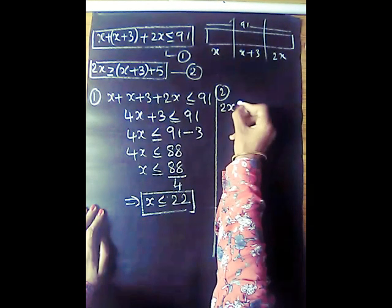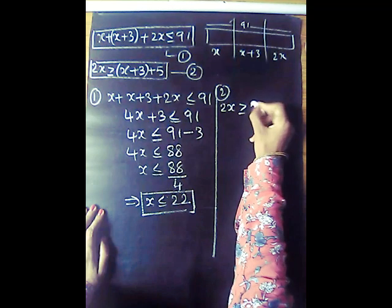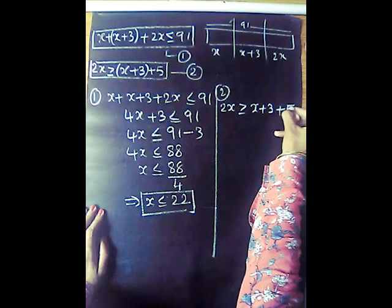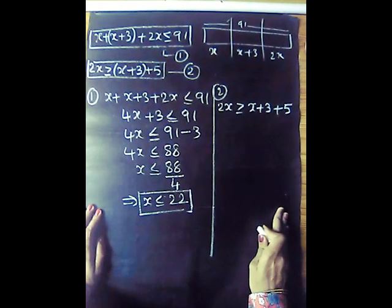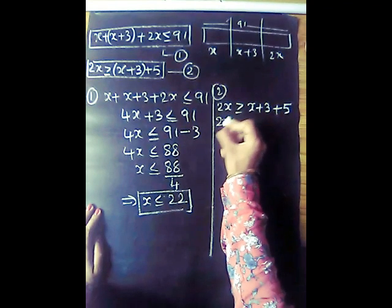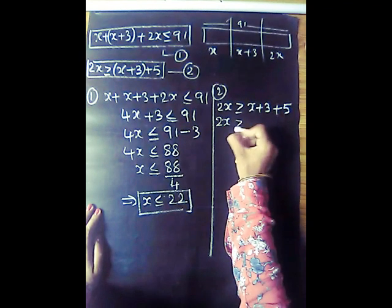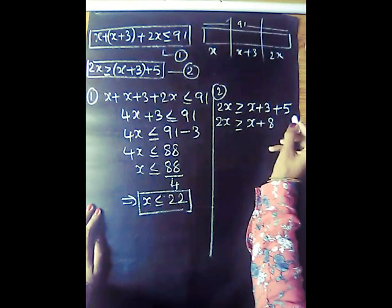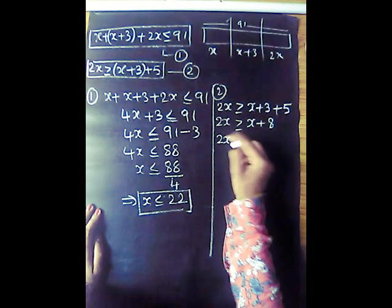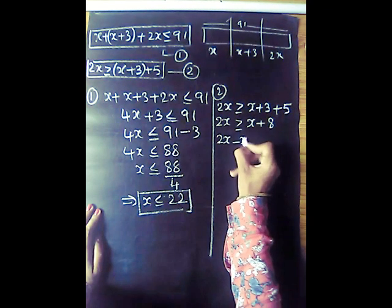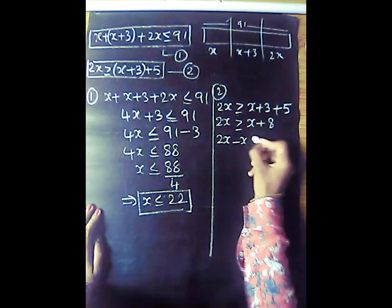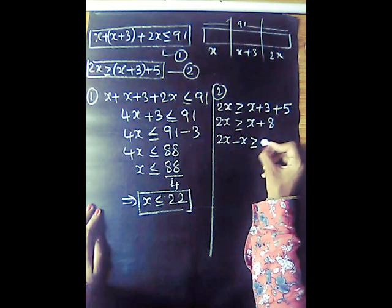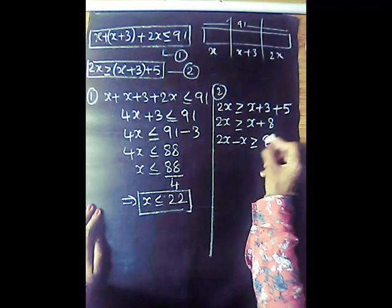For the second condition: 2x is greater than or equal to x plus 3 plus 5, so 2x is greater than or equal to x plus 8. Subtracting x from both sides: x is greater than or equal to 8.